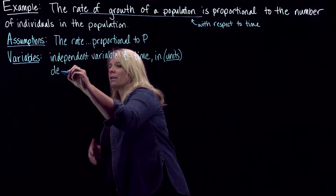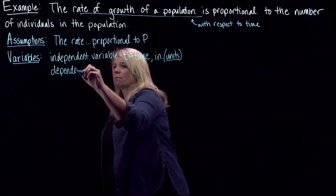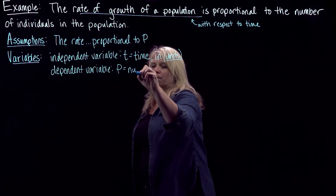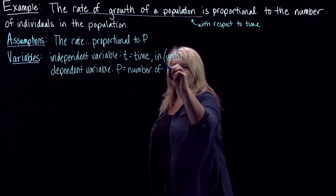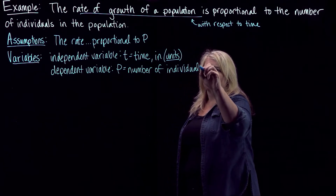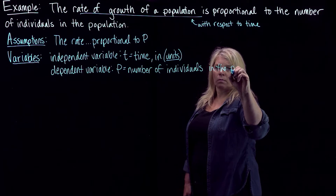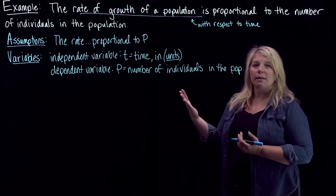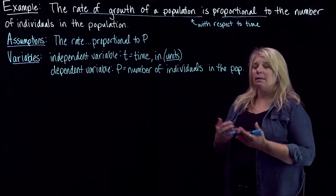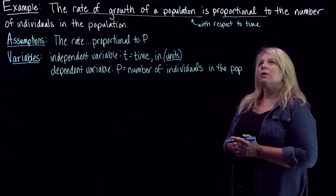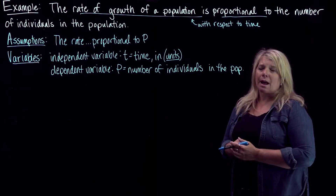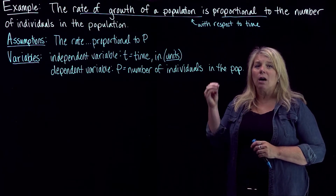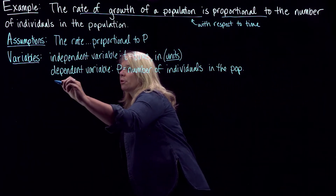Our dependent variable is going to be the number of individuals in the population. We're actually going to have two parameters: one that's explicitly described in our assumptions, and one that's not — that we would need to infer. One of them is this constant of proportionality. When you think about one thing being proportional to another, mathematically that means the first thing equals a constant times the second thing. So we have a constant of proportionality — that's a parameter.